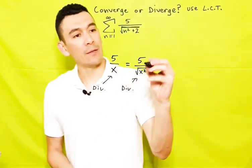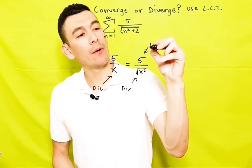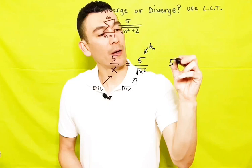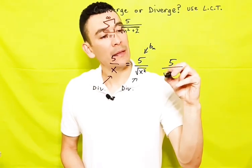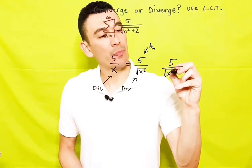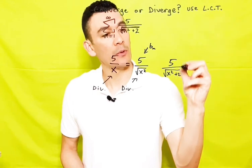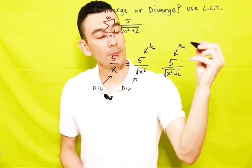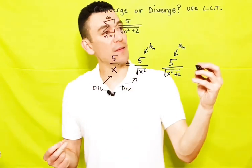What we can do is call this our B sub n, where our A sub n would be the original expression in terms of X. And now what we do is we build A sub n over B sub n.